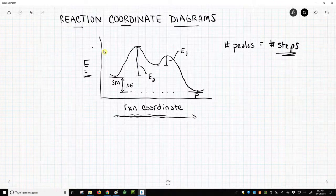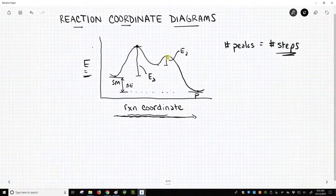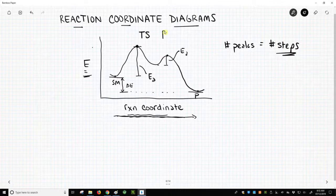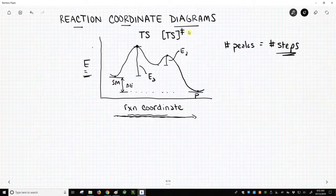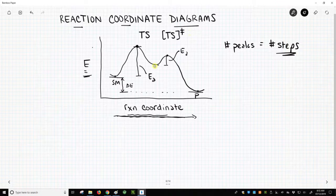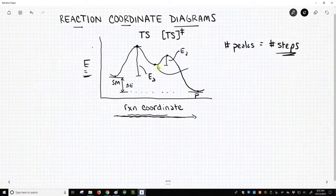There are other features on this curve. Our peaks themselves are denoted as transition states, and we tend to write those as TS. Often you'll see TS written in brackets, and you'll see the double dagger symbol put on that bracket, and that's a special symbol to denote that it's a transition state. We also have a valley in this particular curve, and that corresponds to a reaction intermediate.